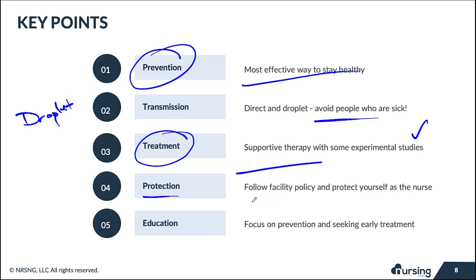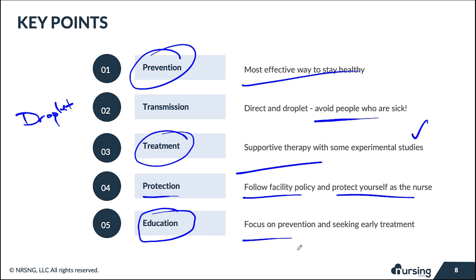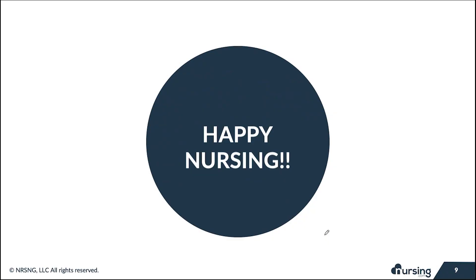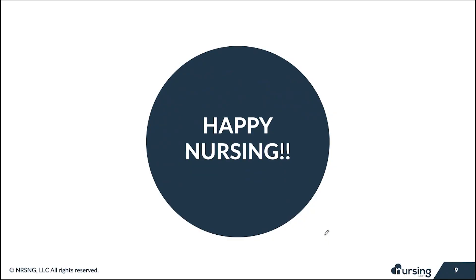Fourth, protection is essential — follow your facility's PPE policy and protect yourself as a nurse. Fifth, education ties back to prevention: teach patients to wash hands, avoid crowded areas, cough into their elbow, and maintain at least three to six feet of distance from those with respiratory illness. If a patient thinks they may have coronavirus, encourage them to seek treatment early. Happy nursing!